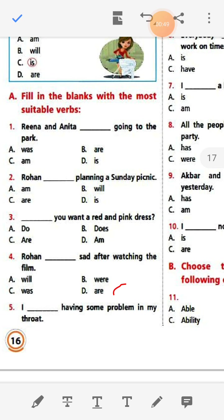Most verbs are doing verbs, like run, sing, play, draw, eat. These types of words are called doing words. This verb tells us what a person or thing does.